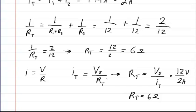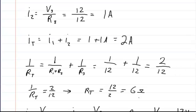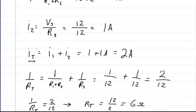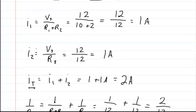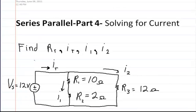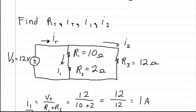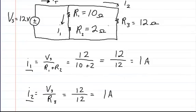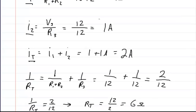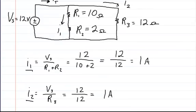So now we've solved for the total resistance, the total current, and the current in branch 1 and branch 2 — RT, IT, I1, and I2. So there you go, that's how you solve this type of circuit.